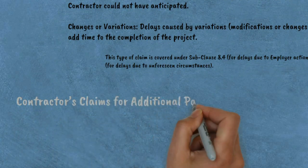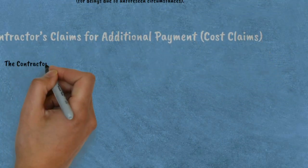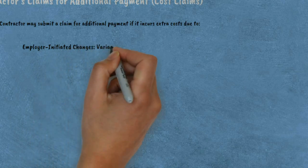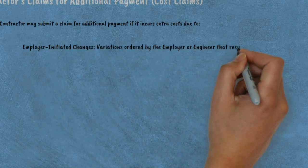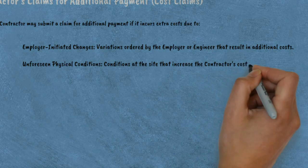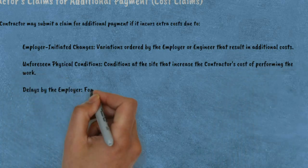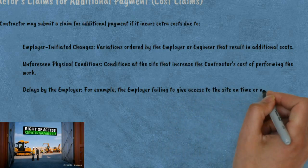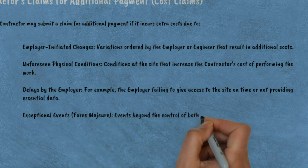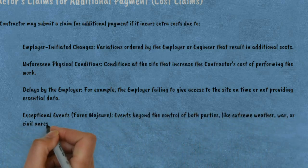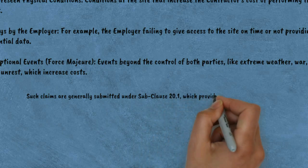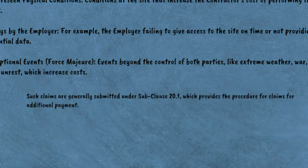Second, contractor's claims for additional payment — cost claims. The contractor may submit a claim for additional payment if it incurs extra costs due to: employer-initiated changes or variations ordered by the employer or engineer that result in additional costs; unforeseen physical conditions at the site that increase the contractor's cost of performing the work; delays by the employer, for example failing to give access to the site on time or not providing essential data; and exceptional events or force majeure — events beyond the control of both parties like extreme weather, war, or civil unrest which increase costs. Such claims are generally submitted under Sub-clause 20.1, which provides the procedure for claims for additional payment.